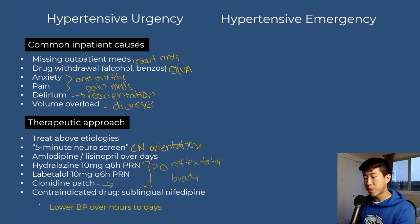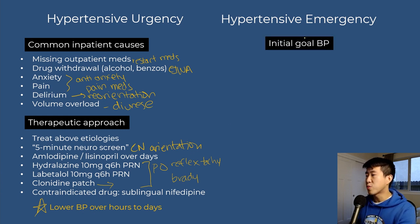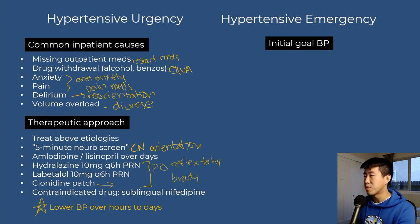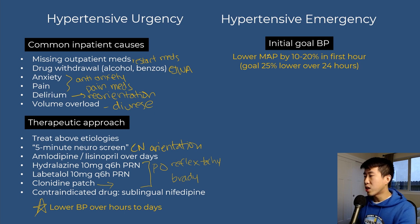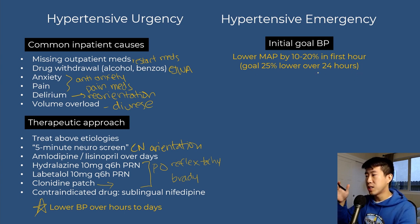The overall approach for hypertensive urgency is to lower blood pressure over hours to days. This contrasts with hypertensive emergency, where the goal is to lower the MAP by about 10 to 20 percent in the first hour of presentation, then achieve a goal of about 25 percent lower over the next 24 hours.